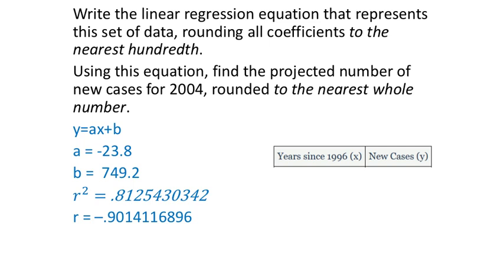Now that we have the information from the calculator, I don't really need any information from the table anymore, other than to maybe check in case I got some values wrong. My equation should be y equals ax plus b, a being the slope, and b is still our y-intercept.